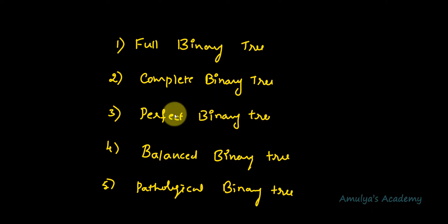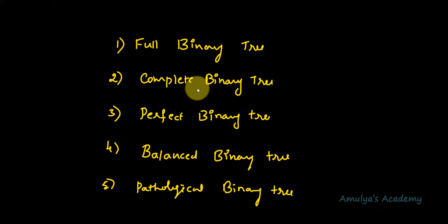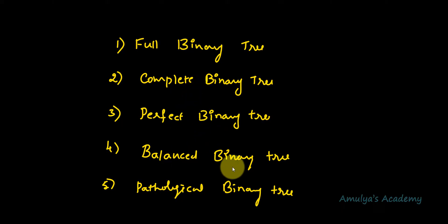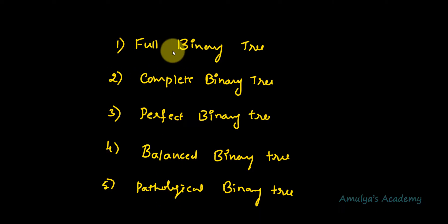So we have 5 types of binary tree: full binary tree, complete binary tree, perfect binary tree, balanced binary tree, and pathological binary tree. First, let's discuss about the full binary tree — what it is and how it looks.